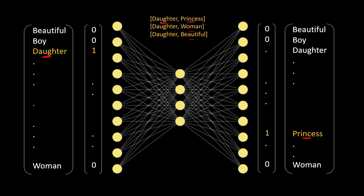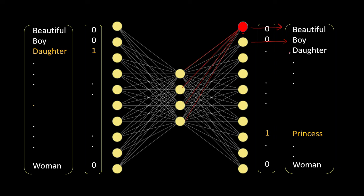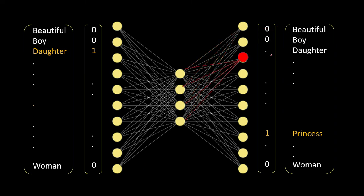After the weights are adjusted the model will realize that daughter and princess are related, daughter and woman are related, daughter and beautiful are related. Every neuron in the output layer corresponds to one word in our vocabulary. For example, one neuron corresponds to 'beautiful' and another to 'boy,' with weight values associated with each. To get word embeddings, we extract these weight values, because they are specific to the corresponding word. In our example, the word 'beautiful' has four weight values w1, w2, w3, w4 — and the vector [w1, w2, w3, w4] is the word embedding for 'beautiful.'